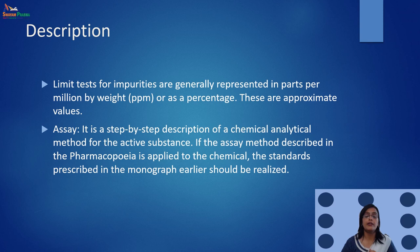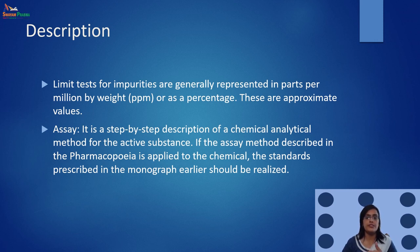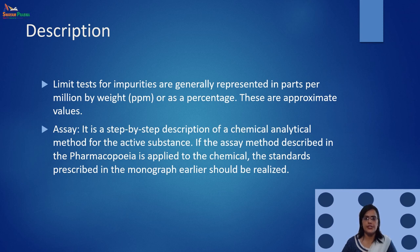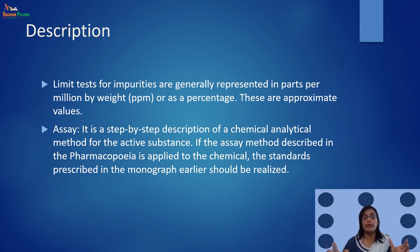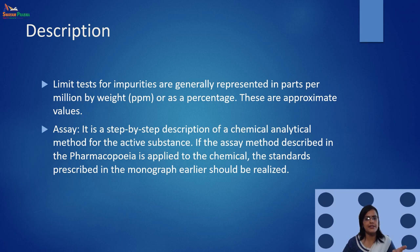Next is the limit for impurity. For different chemicals, different limit tests have been included, and different amounts of such impurities are permissible for that chemical. The limit test for impurities is generally represented in parts per million by weight (PPM) or as a percentage — these are approximate values. Assay is also very important — it is a step-by-step description of a chemical analytical method for the active substance. If the assay method described in the pharmacopoeia is applied to a chemical, the standard prescribed in the monograph should be realized.